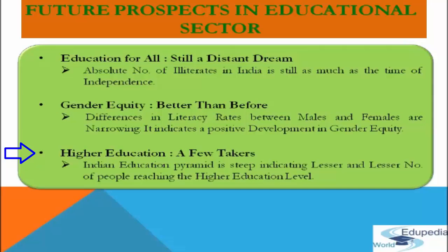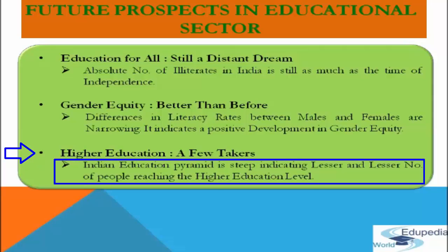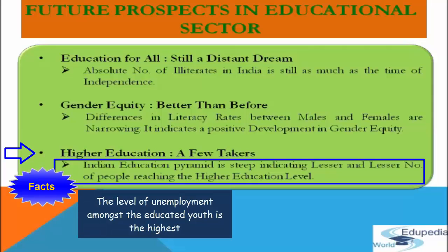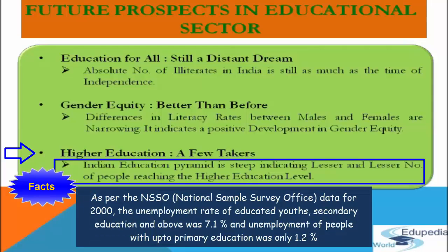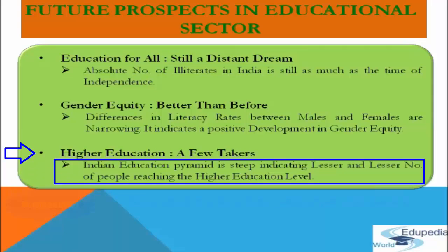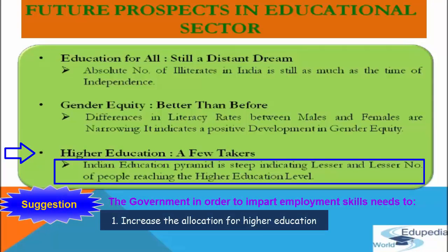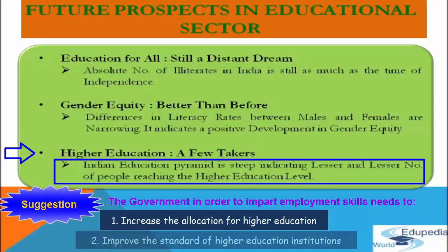Regarding higher education — it has very few takers. The Indian education pyramid is steep, indicating lesser and lesser numbers of people reaching the higher education level. Moreover, the level of unemployment among educated youth is the highest. As per NSSO data in 2000, the unemployment rate of educated youth (secondary education and above) was 7.1%, while unemployment of people with up to primary education was only 1.2%. Therefore, the government needs to increase allocation for higher education and improve the standard of institutions so that students are imparted employable skills.